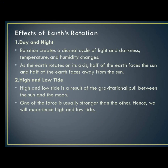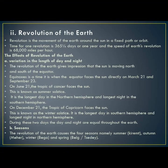Today we are going to look at the revolution of the earth. Revolution is the movement of the earth around the sun in a fixed path, or orbit. The earth takes 365 and one-quarter days to complete one revolution, or one year. The speed of revolution is around 68,000 miles per hour. One mile is equal to 1.6 kilometers.